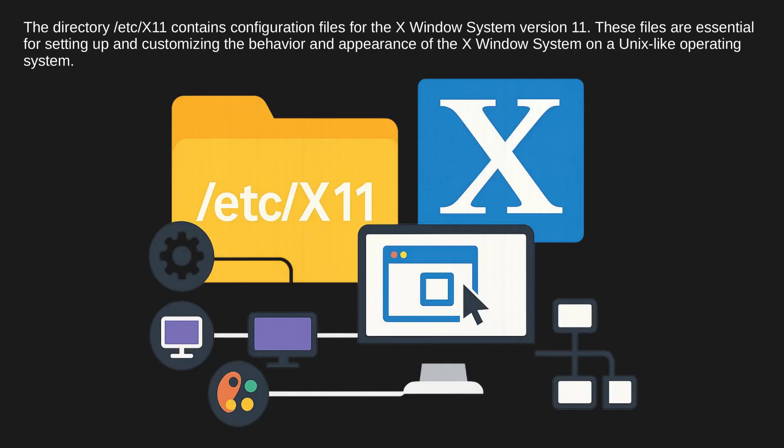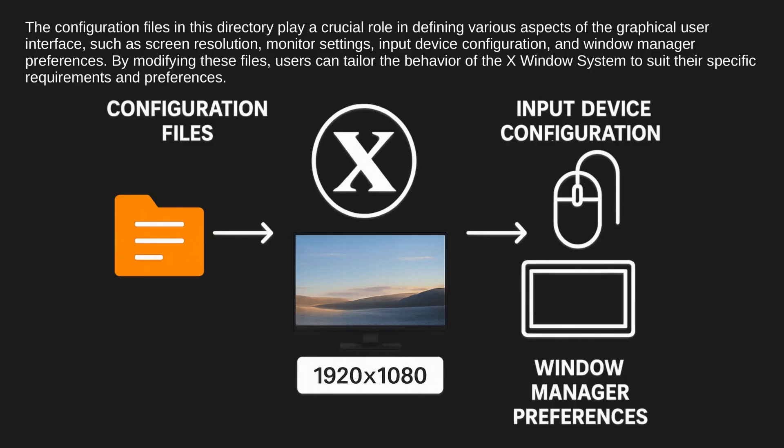The directory /etc/X11 contains configuration files for the X Window System version 11. These files are essential for setting up and customizing the behavior and appearance of the X Window System on a Unix-like operating system. The configuration files in this directory play a crucial role in defining various aspects of the graphical user interface, such as screen resolution, monitor settings, input device configuration, and window manager preferences. By modifying these files, users can tailor the behavior of the X Window System to suit their specific requirements and preferences.